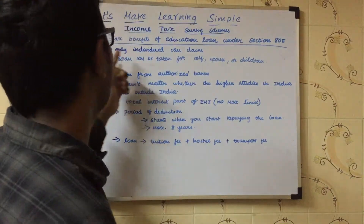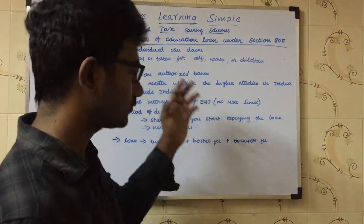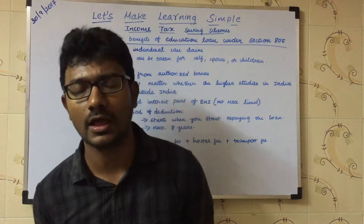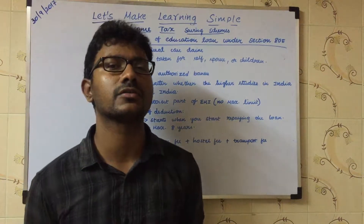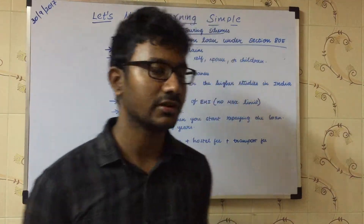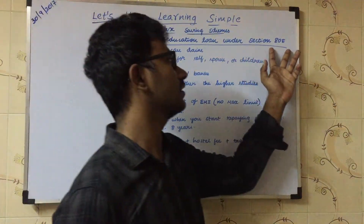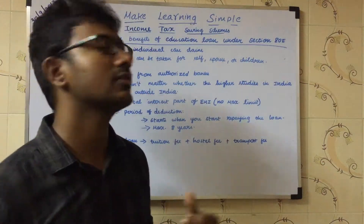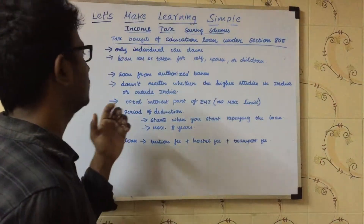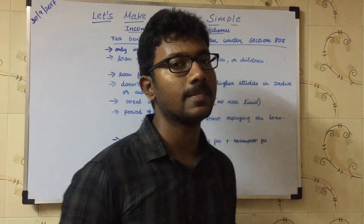First, this is applicable only for individuals. If you have taken an education loan for yourself, or for your spouse, or for your children, then under Section 80E the tax exemption is applicable. You should have taken the loan from authorized banks only.